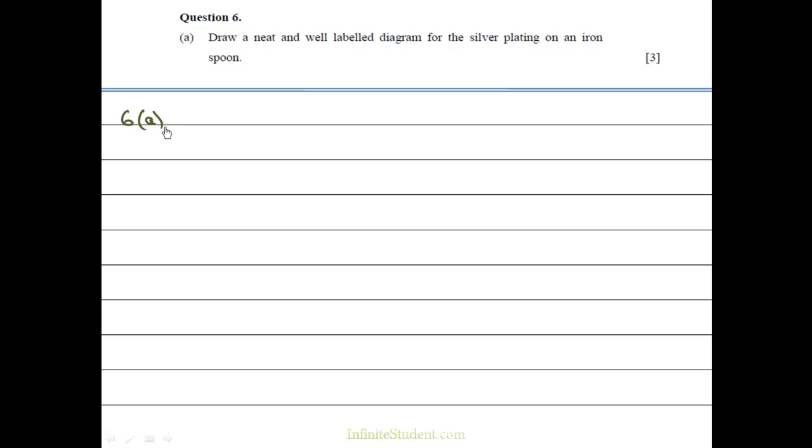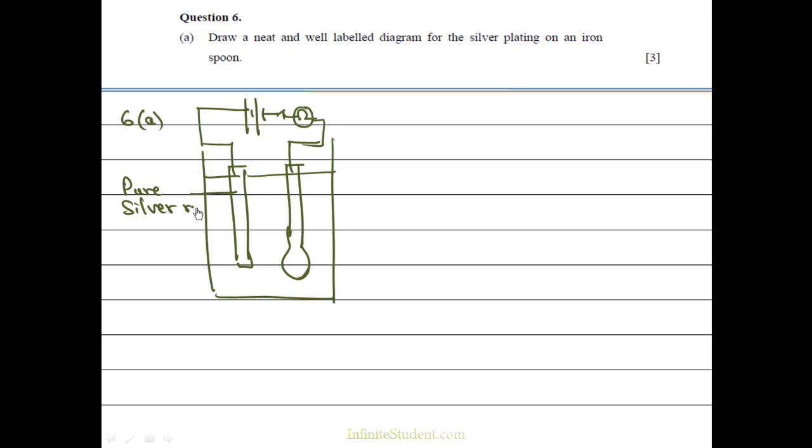So 6A, the spoon. The article to be plated always forms the cathode. So if we would use a pure silver rod, which would form the anode. The iron spoon would form the cathode.